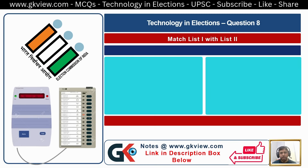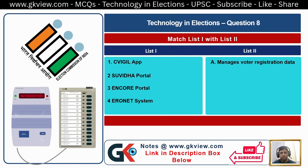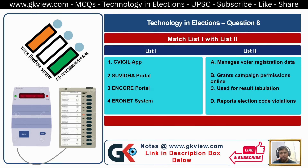Question Number 8. Match List 1 with List 2. List 1: 1. C-Vigil App (Vigilance for Citizens), 2. Suvidha Portal, 3. Encore Portal, 4. Eronet System. List 2: A. Manages voter registration data, B. Grants campaign permissions online, C. Used for result tabulation, D. Reports election code violations.